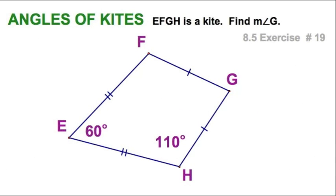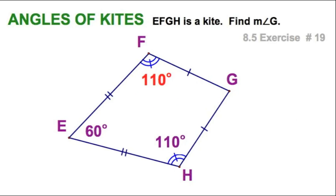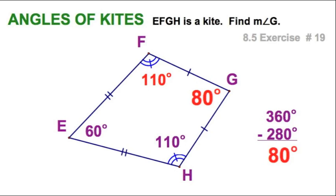A slight variation from the previous exercise. We have a kite, and you see the congruent sides there — the other pair are here. Remember, these angles H and F are going to be the congruent angles, so the 110 over there too. If I add them all up — 110, 110, 60 — I've got 280. Take that away from 360 because it's a quadrilateral. I'm left with 80.